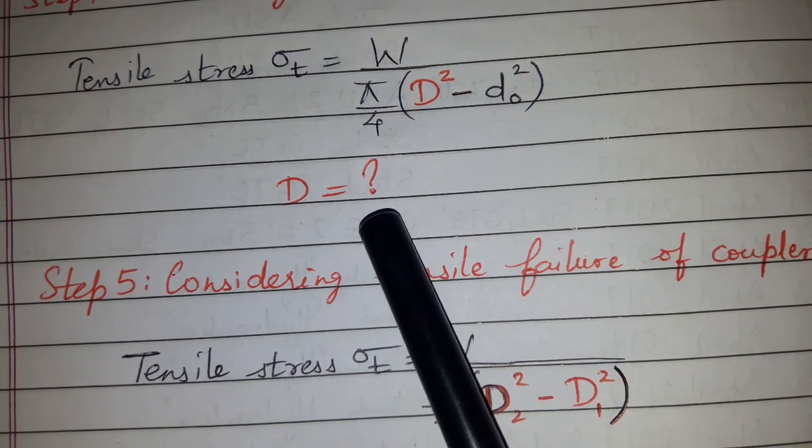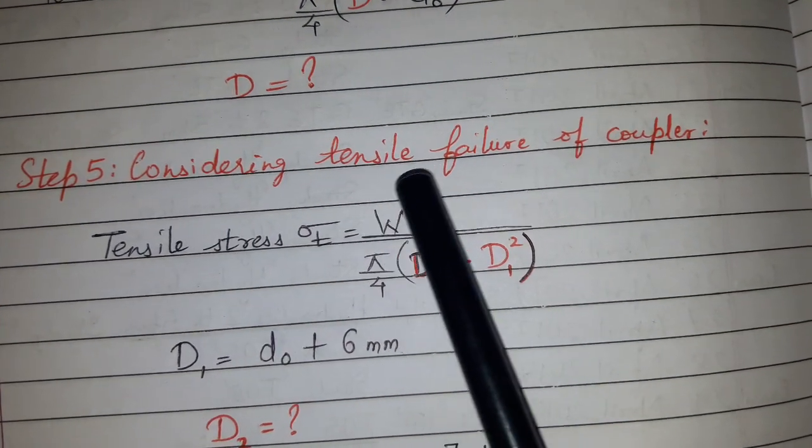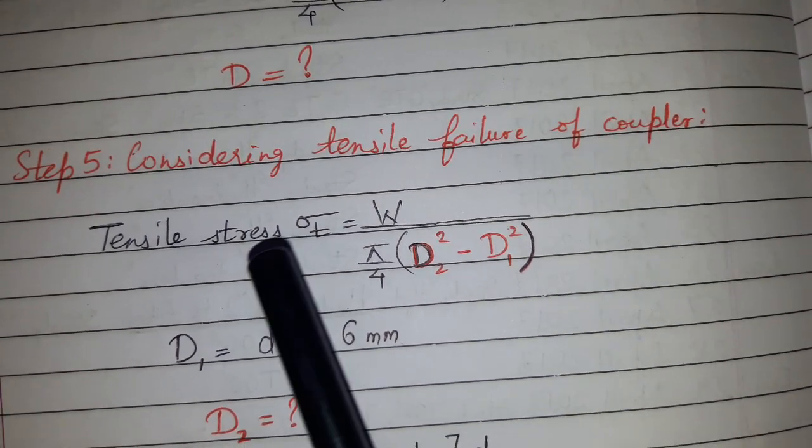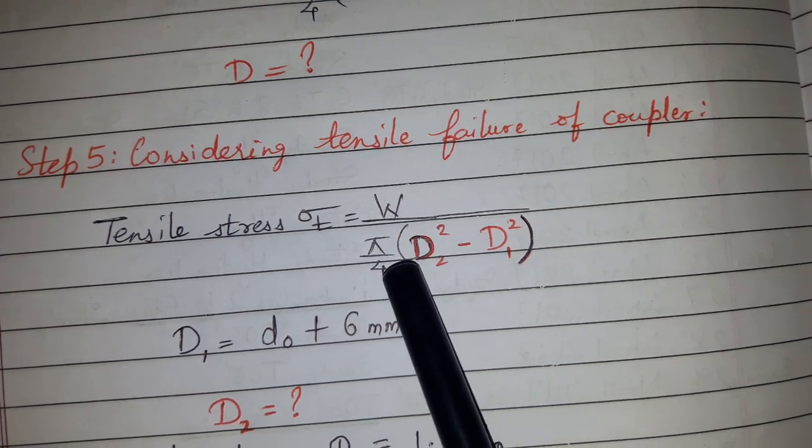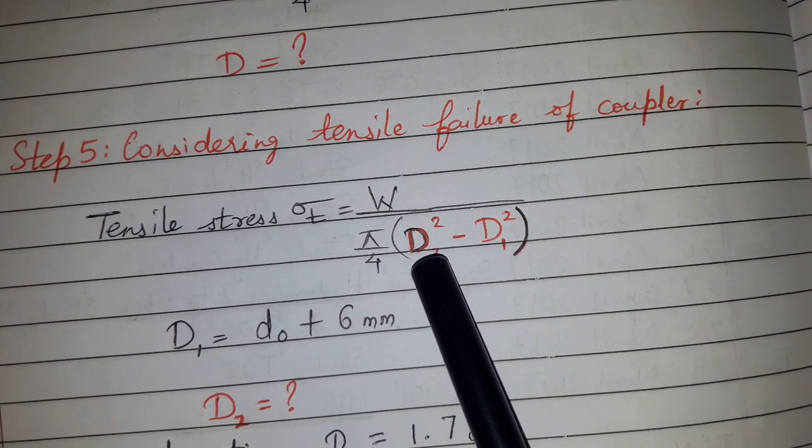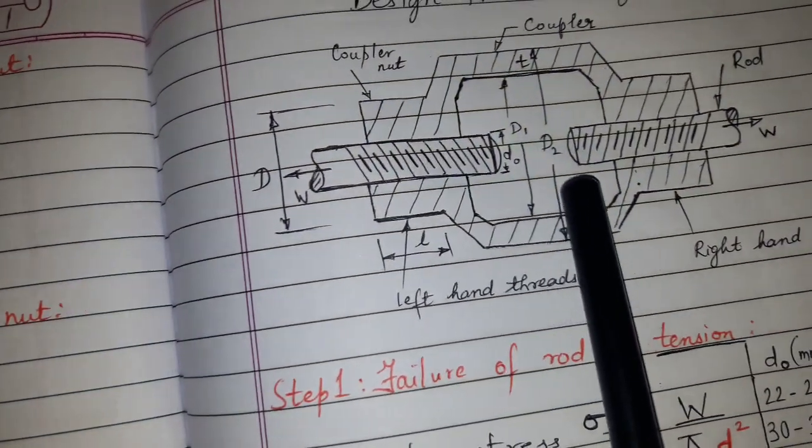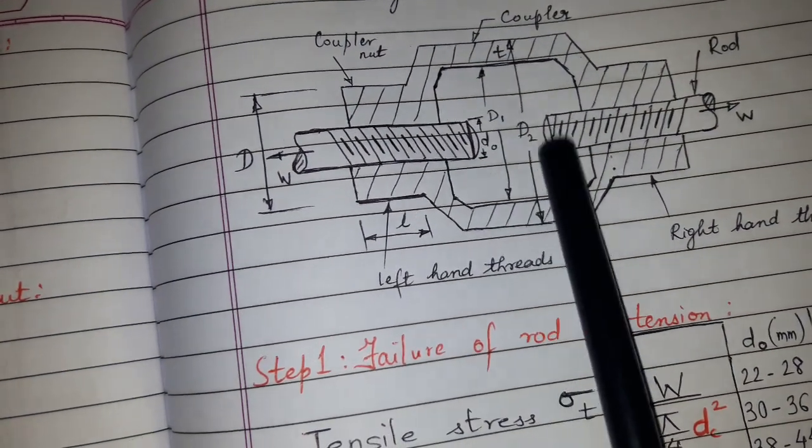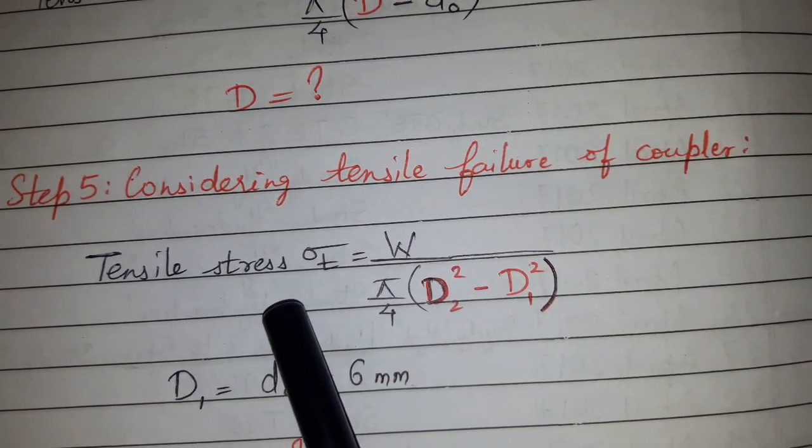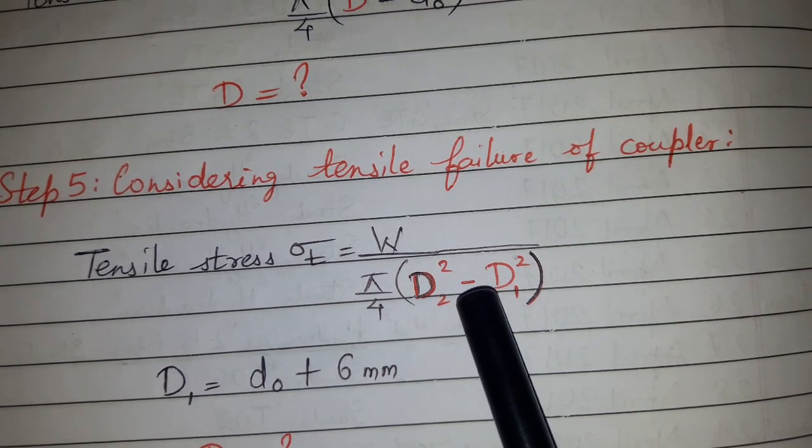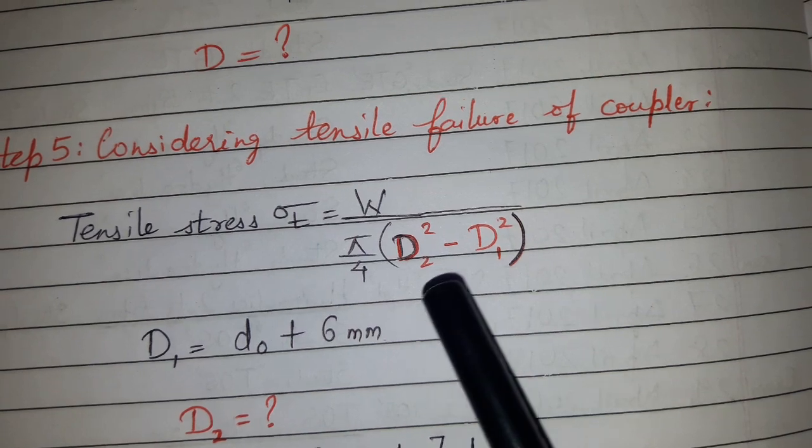Once we finalize this D, we will move to the next step: considering tensile failure of coupling. Tensile stress equals load upon the affected area, that is (π/4)(D2² - D1²). We are talking about this D1 and D2, this particular area. Here we have two unknowns: D2 and D1.